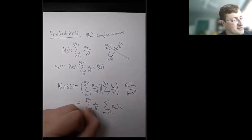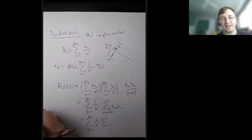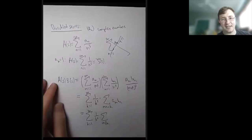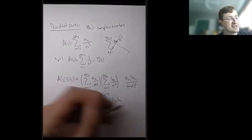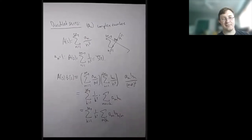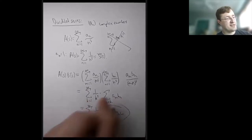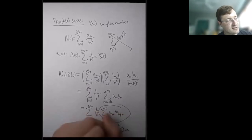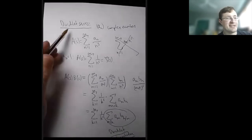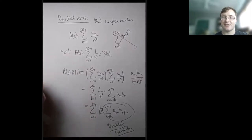Writing it more cleanly: the coefficient of 1 over k to the s is 1 over k to the s times the sum over divisors m of k of a_m times b_{k/m} — that notation means m divides k. So I'm summing a_m * b_{k/m} as m varies over all factors of k. This is what's known as a Dirichlet convolution. Dirichlet studied lots of series like this; he was really one of the first mathematicians to make use of these series to solve number theory problems.